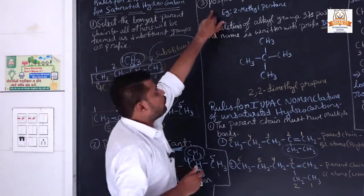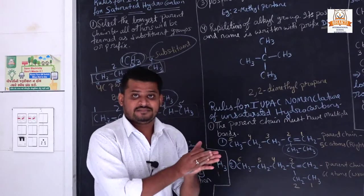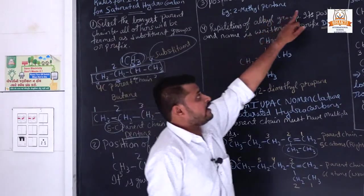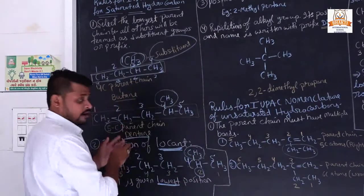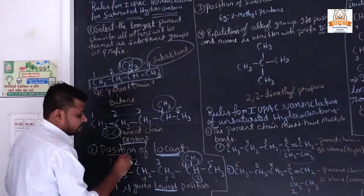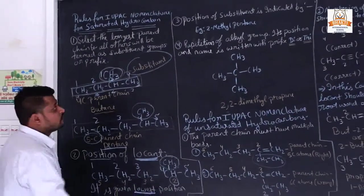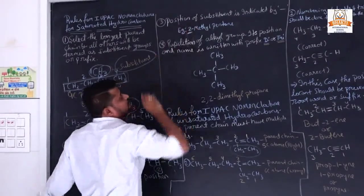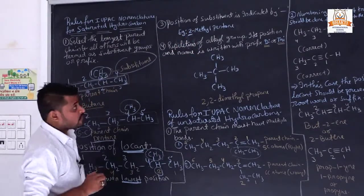The third rule: the position of the substituent is indicated by a dash. We separate the position number and the name using a dash symbol. See here: the position is second, so we write '2' first, then a dash, then the substituent name.